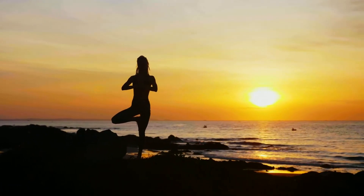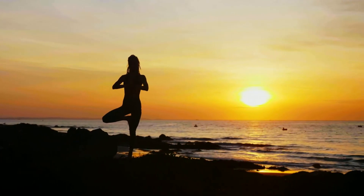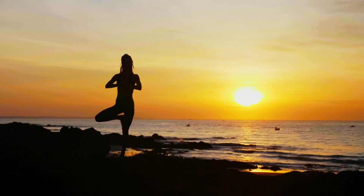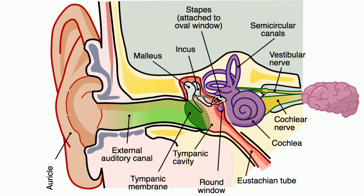Close your eyes and try to balance on one foot. This activity triggers your sense of balance, also called equilibrioception. Your inner ear has three fluid-filled canals and tiny hairs that sense the location of your head and send this information to your brain. Your brain then sends information to your eyes, joints, and muscles to help you balance.